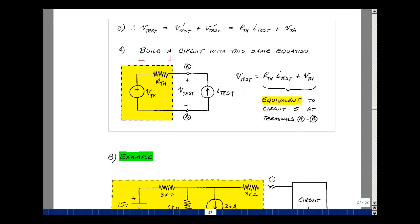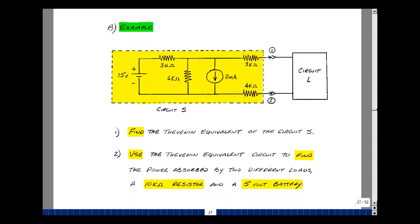Let's do an example. Let's have a circuit with a voltage source, a current source, and four resistors. And that's hooked up to a load. Let's take what's in the yellow box and find the Thevenin equivalent circuit. Let's use that Thevenin equivalent circuit then to find the power absorbed by putting a 10k resistor for the circuit L and a second load here of a battery of 5 volts.